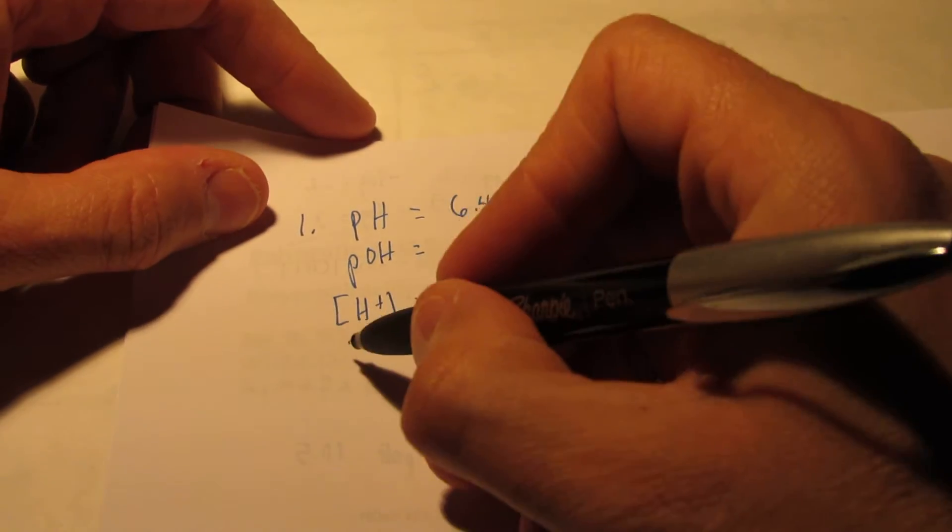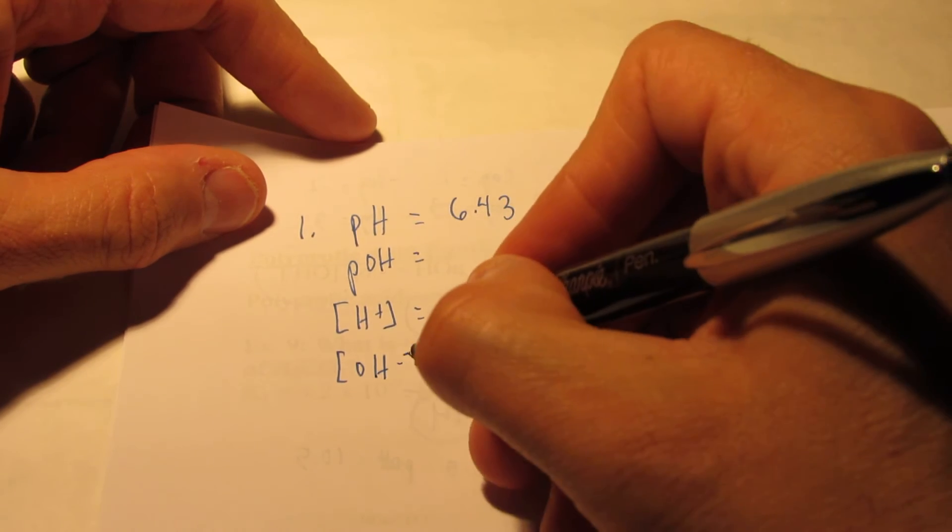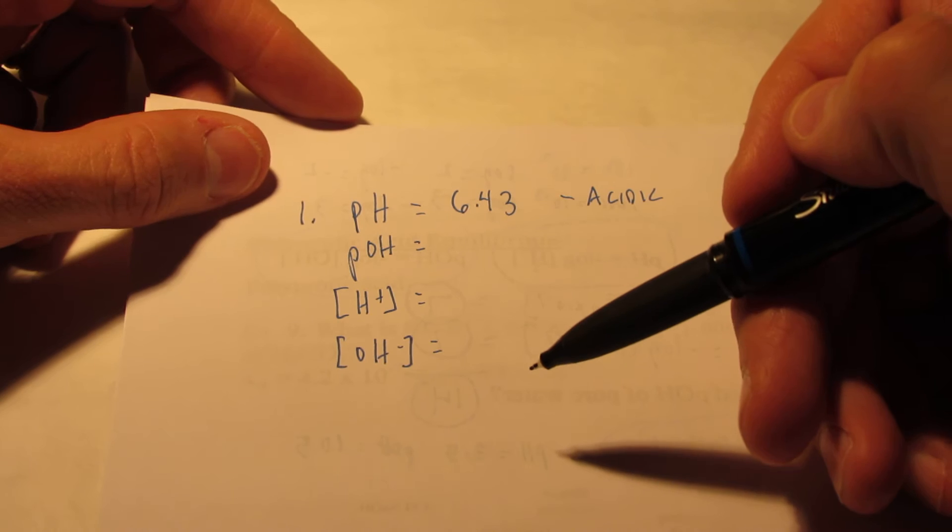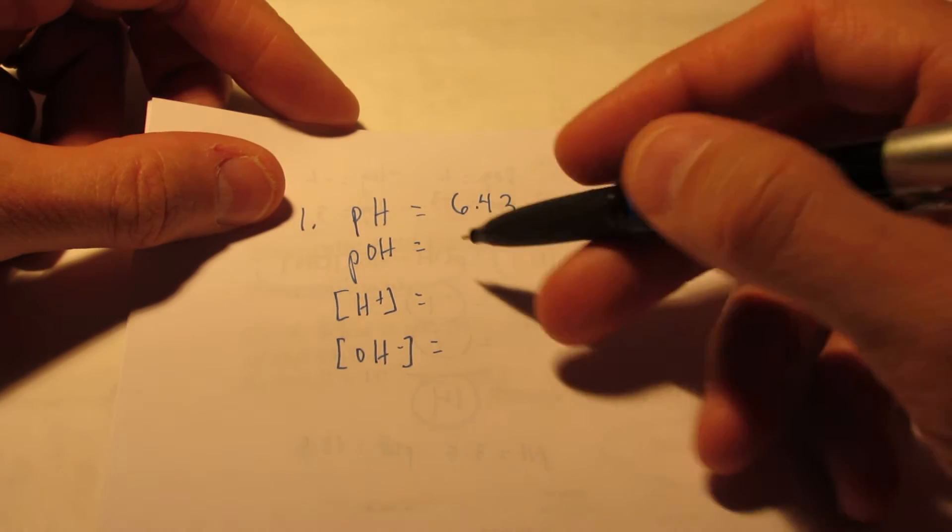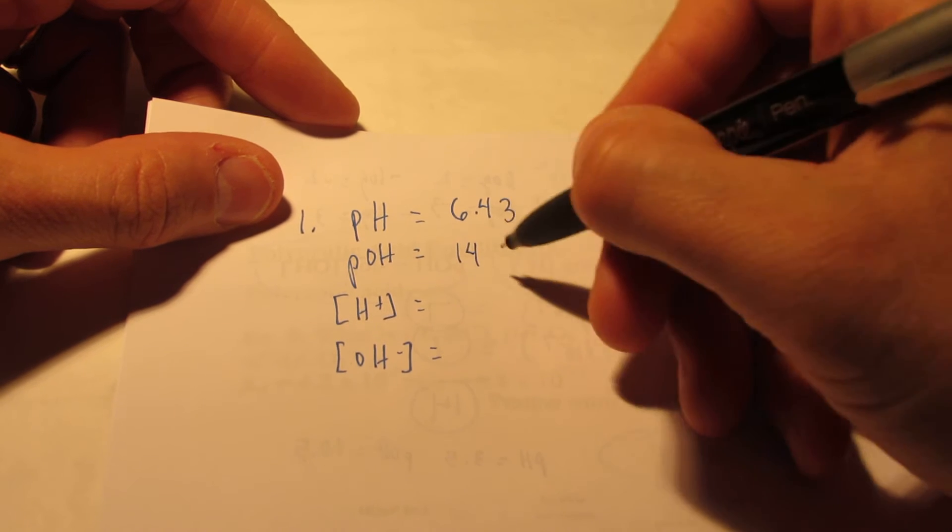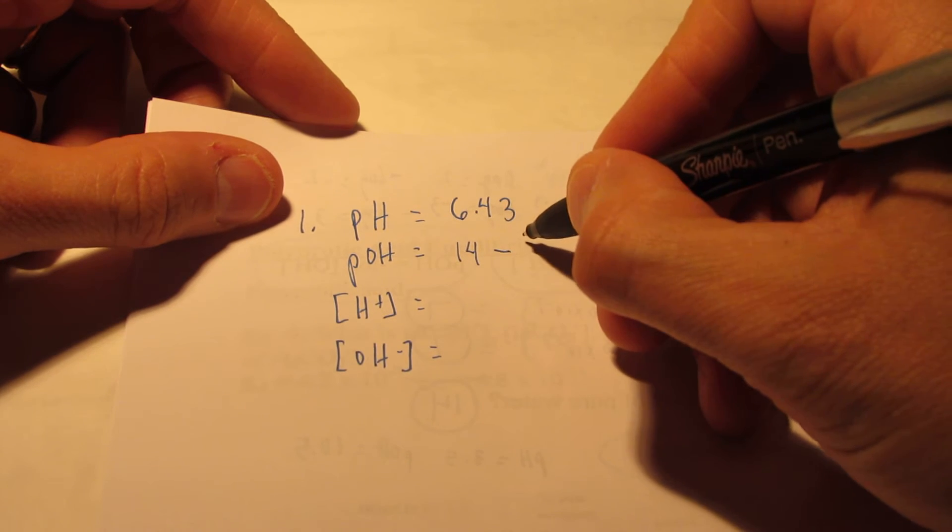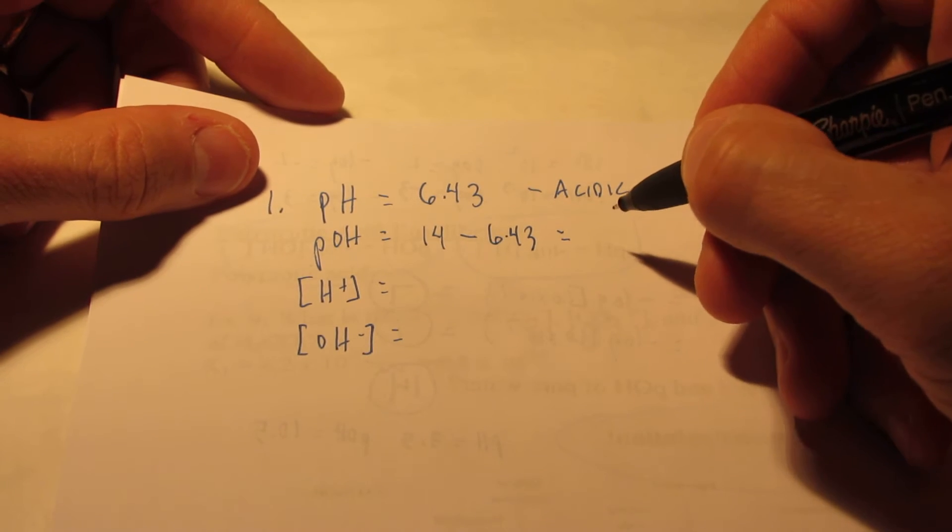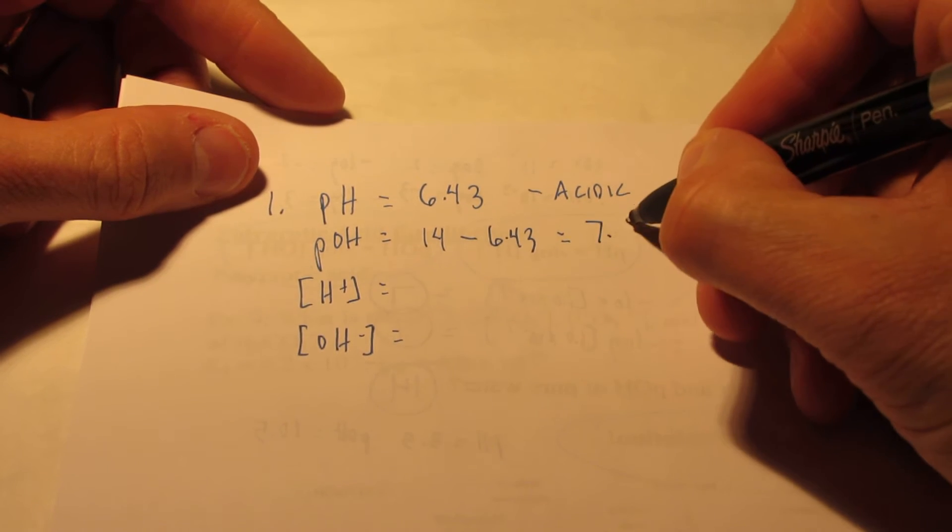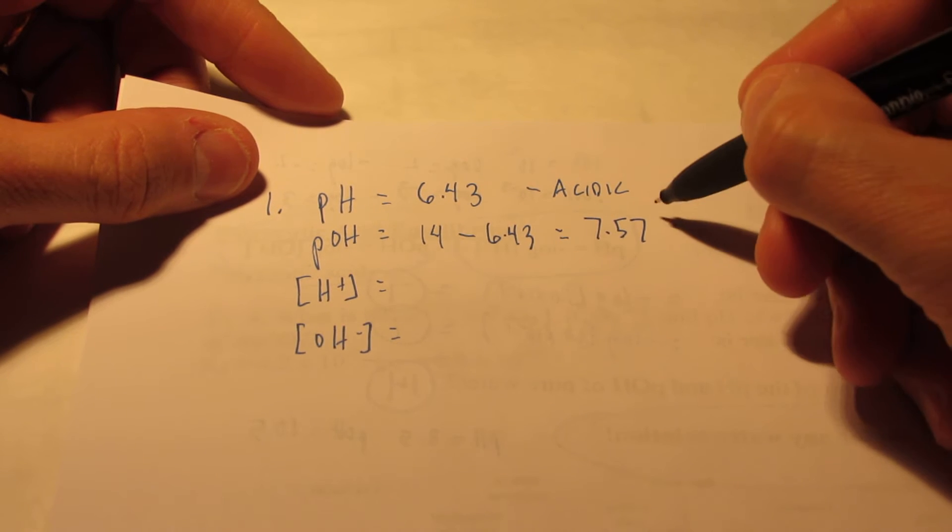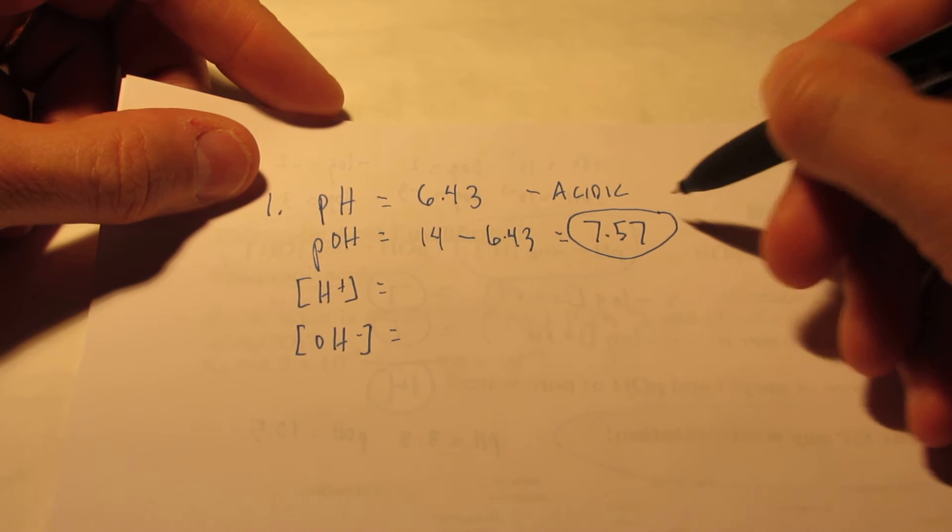Then I want to know the hydronium ion concentration, and then the hydroxide ion concentration. Okay, so if I give you one, you should be able to figure out all the other three. Let's do the easy one first. If the pH is 6.43, the pOH will be 14 minus 6.43. And I'm going to try to do that without a calculator. I think that is 7.57.